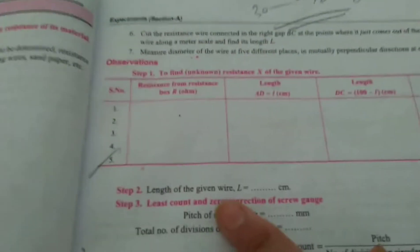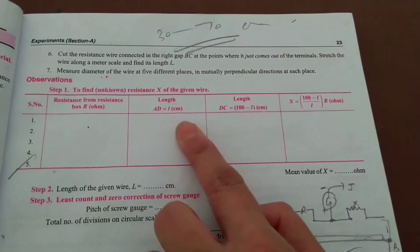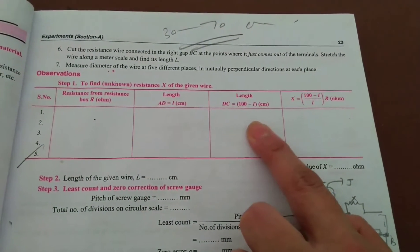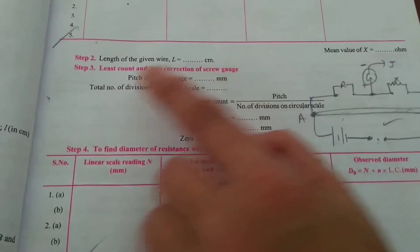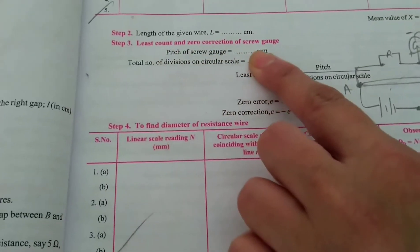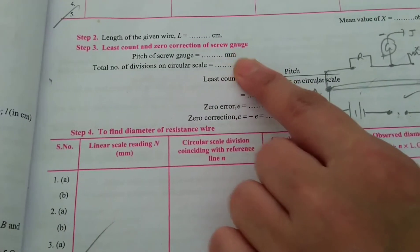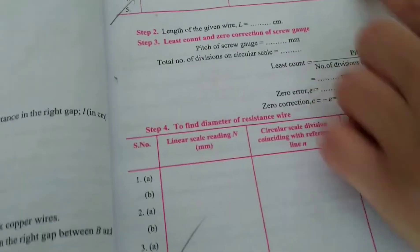To find the required readings we have this observation table. In this observation table we use the resistance from the resistance box, then we find the balancing length and second length that is 100 minus L, and find the unknown resistance and length of wire that is 100 centimeter. Again least count and zero correction, like the previous experiment, we calculate the diameter of the wire to find the specific resistance. So how we get the reading?